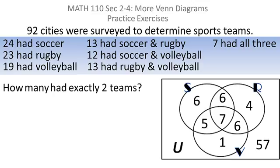Next, how many had exactly two teams? Well, you can see the cities out here had no teams. The cities on the outer parts of the circles had exactly one team. The city in the dead center had three teams. So it's these other cities that had exactly two.